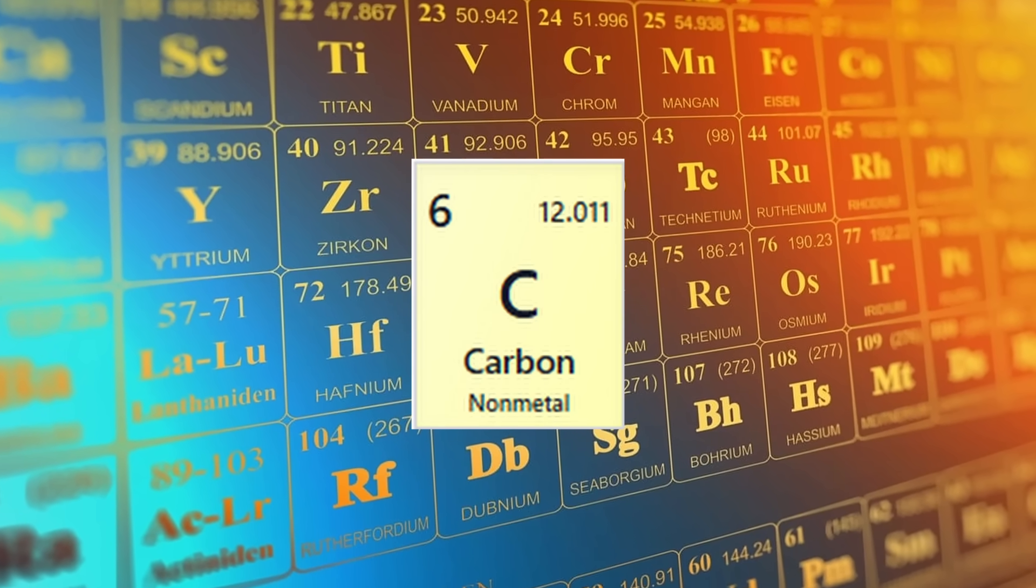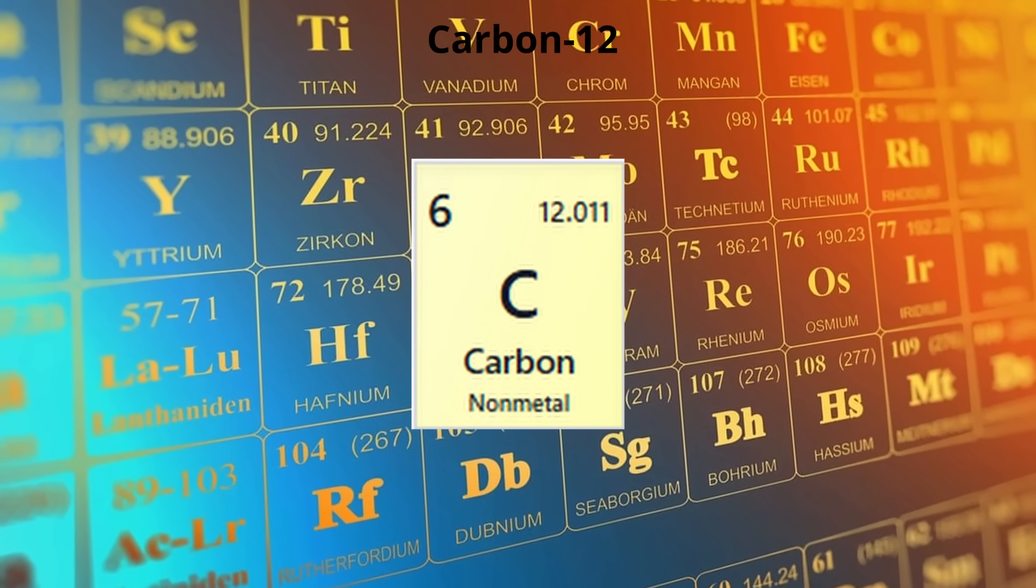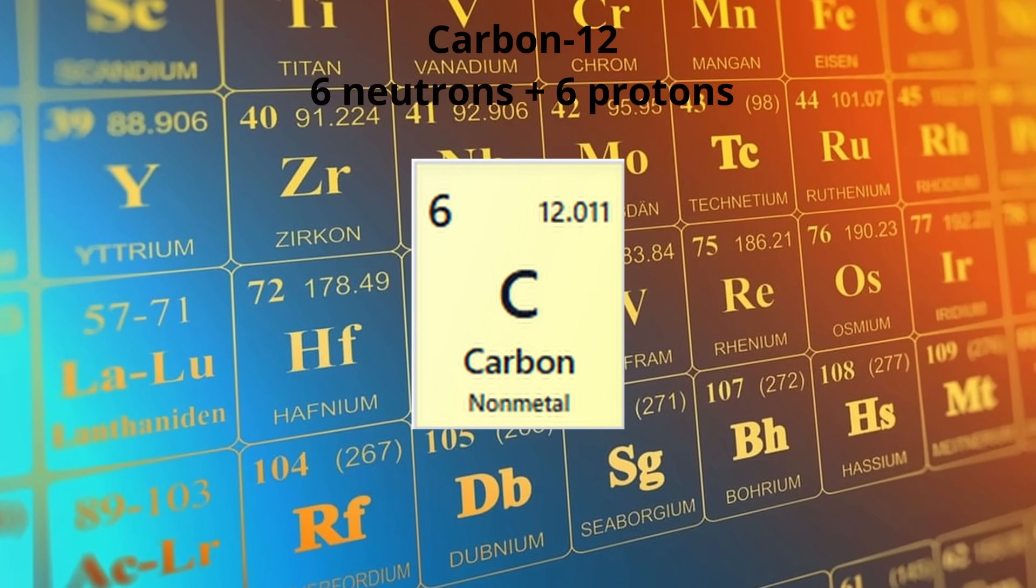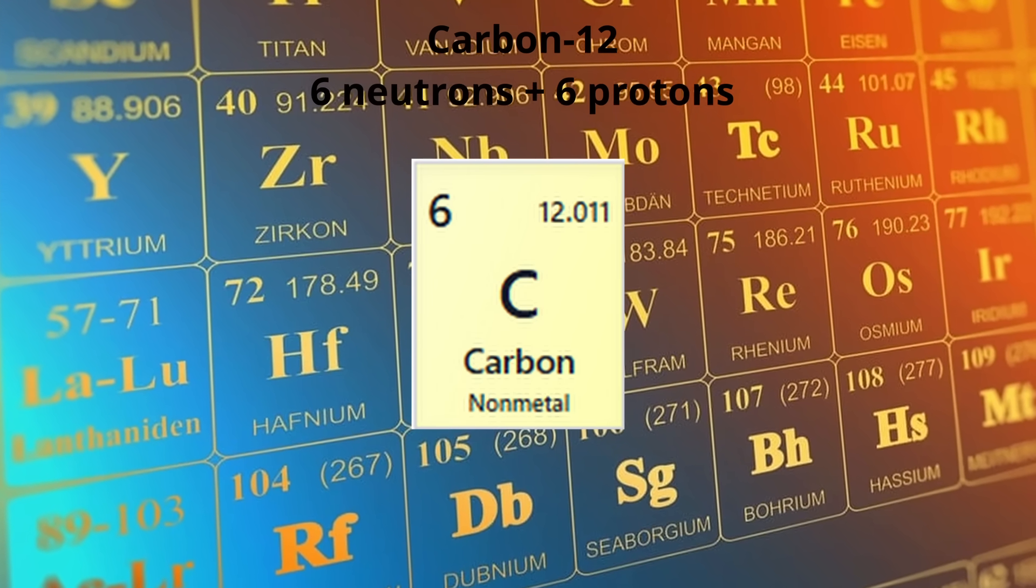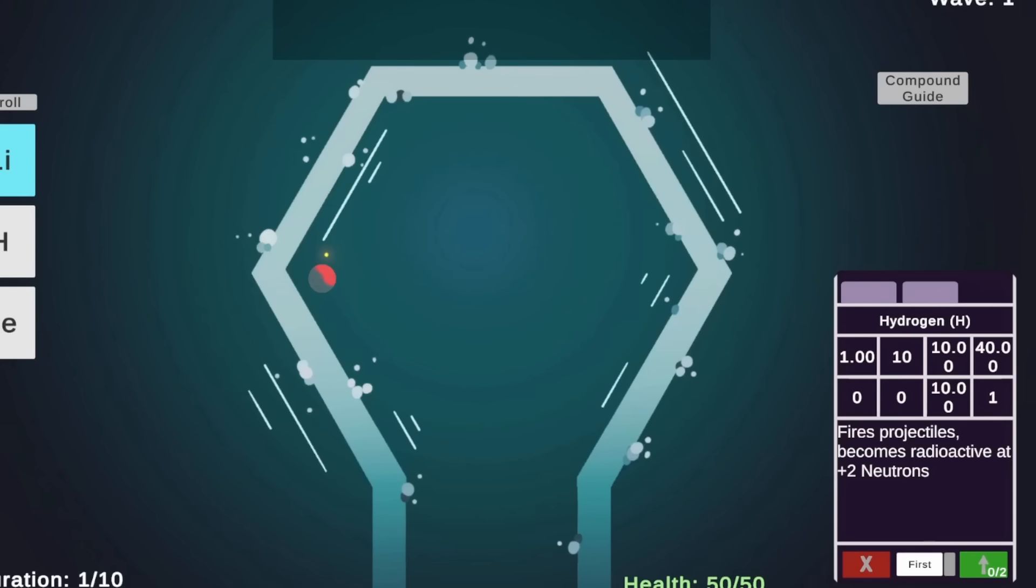For example, the most common isotope of carbon is carbon-12, and because carbon has six protons, we know carbon-12 has six neutrons. This isotope structure provides an interesting basis for tower upgrades, so I made a system where you can change an atom into a higher isotope and it gains more stats.